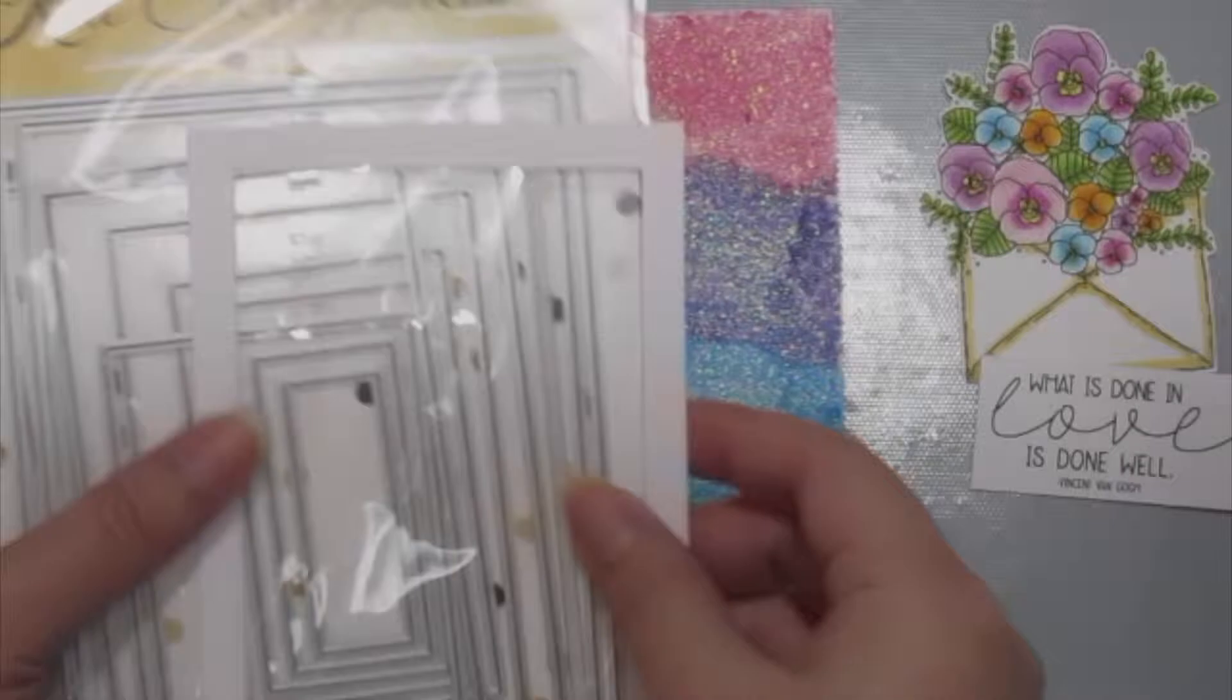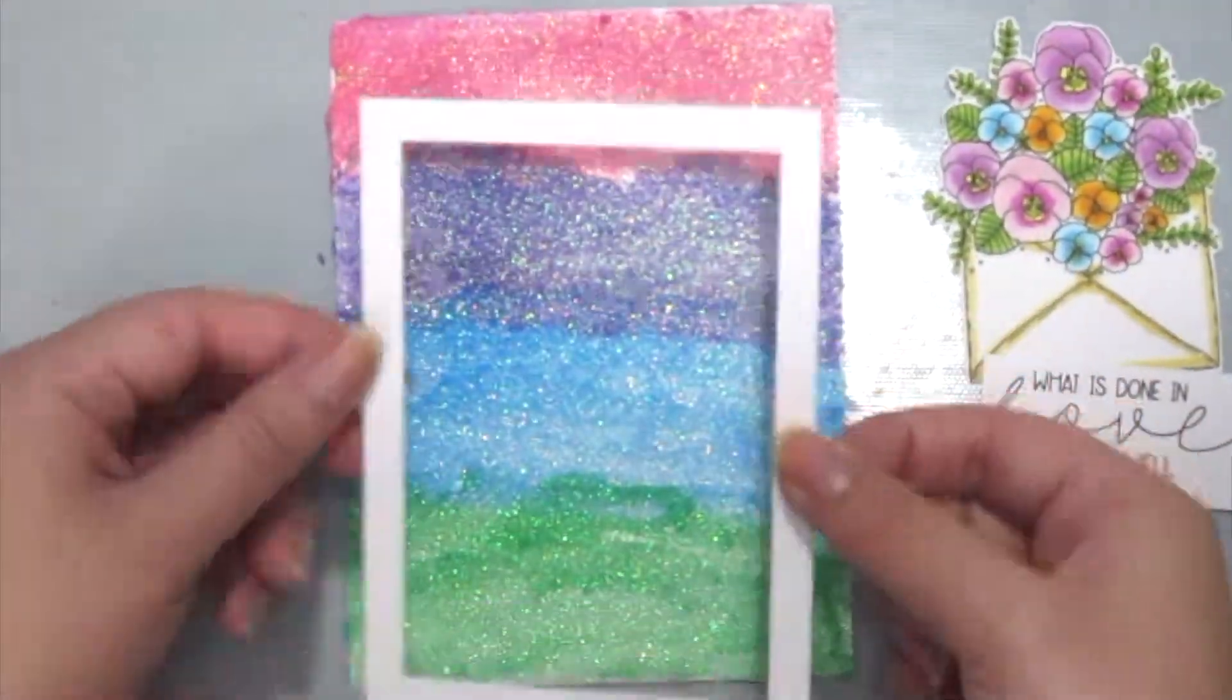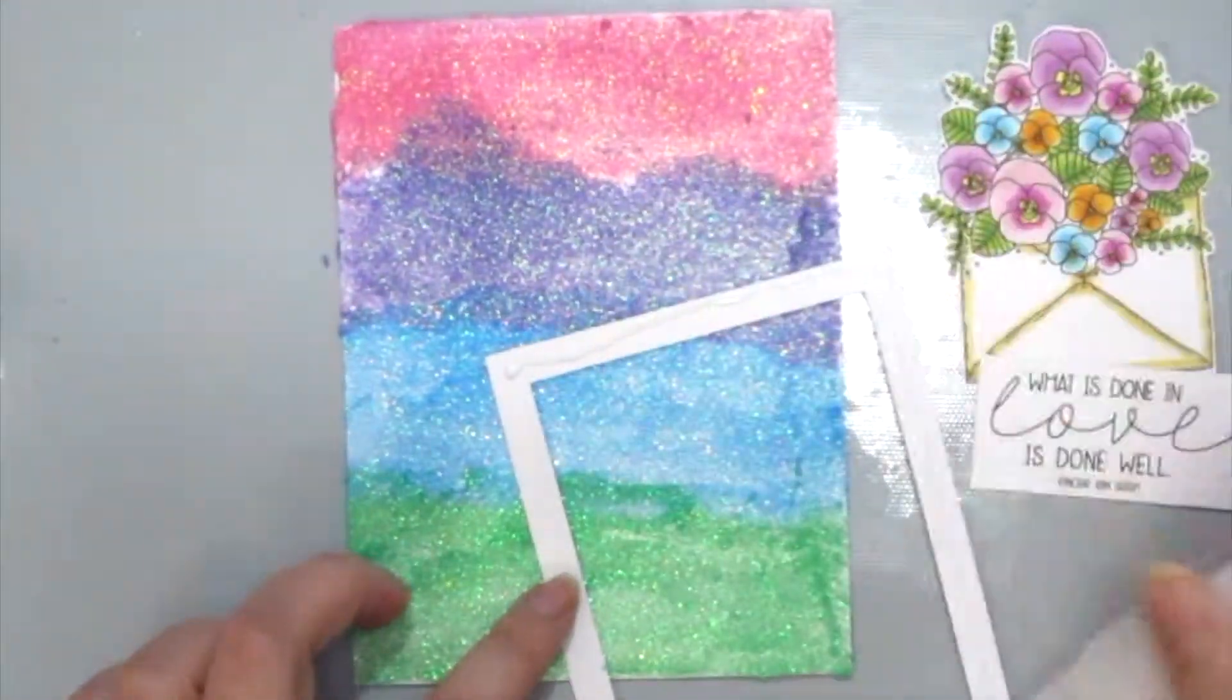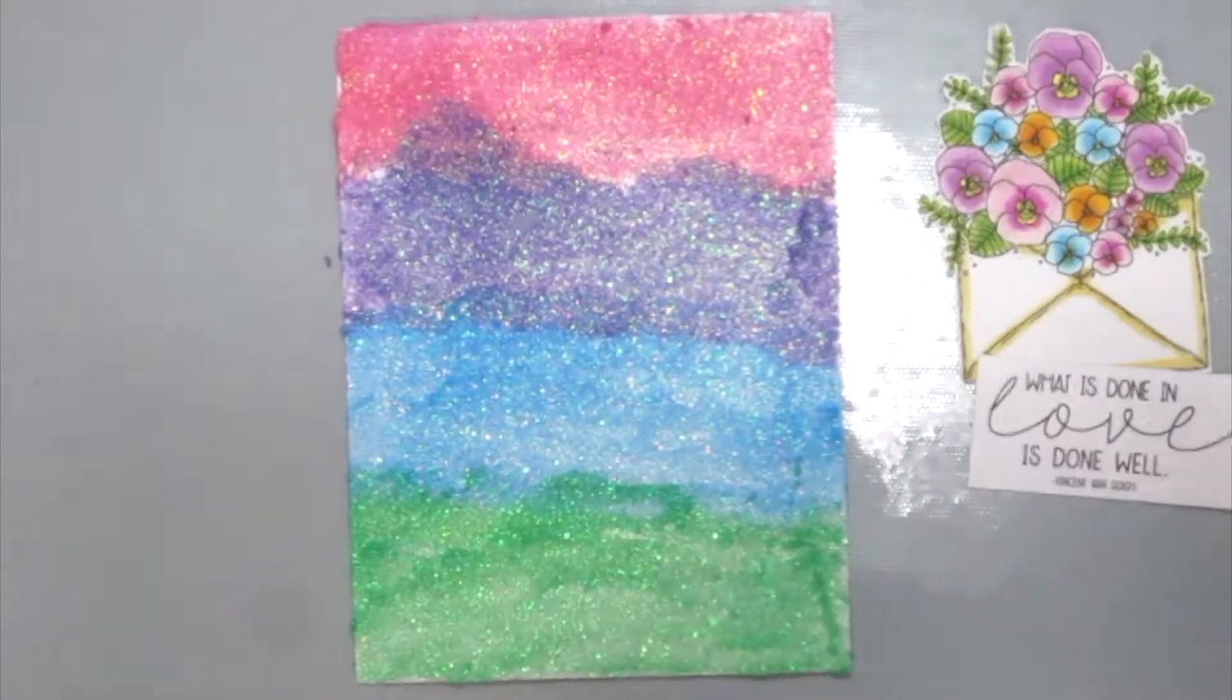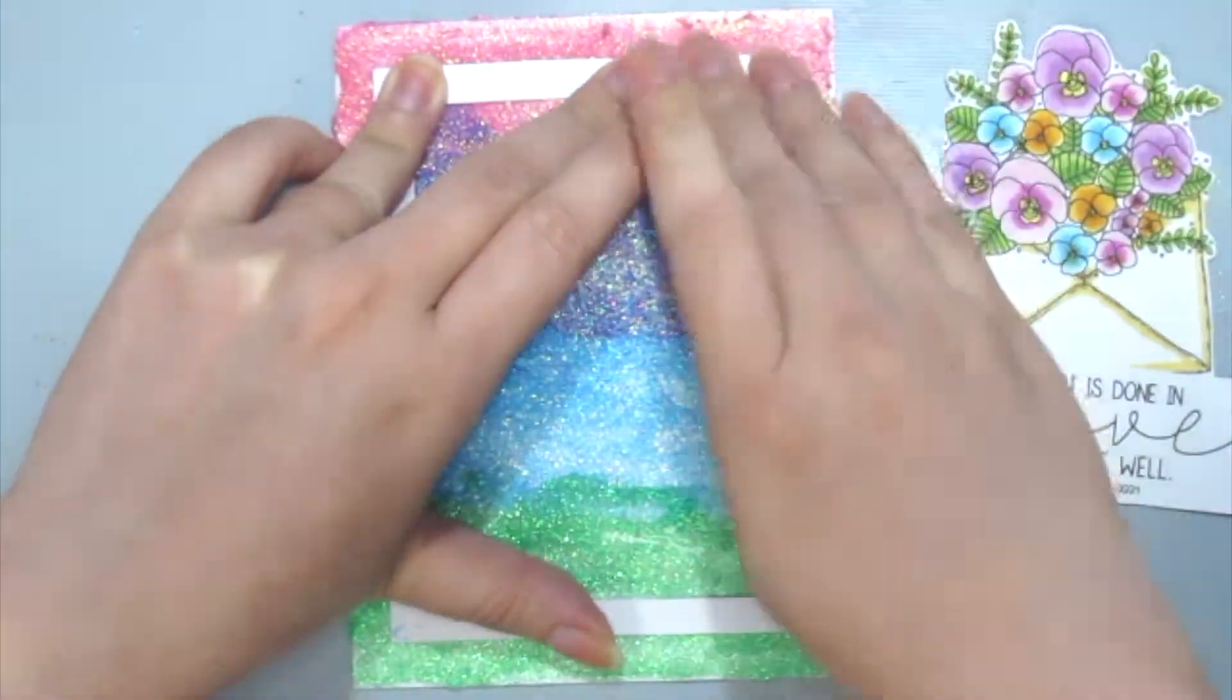So once that's dried, I am adding a frame here which I've created with some nesting dies from white cardstock to just break off the glitter and just create some interest.